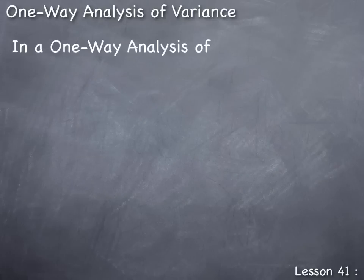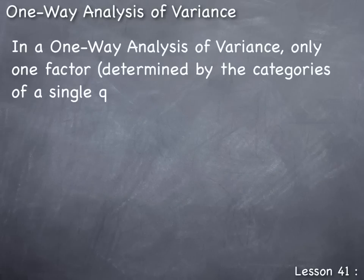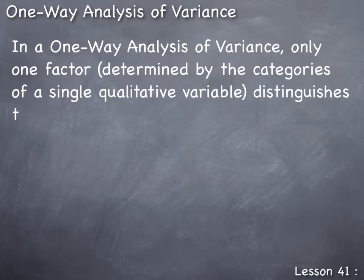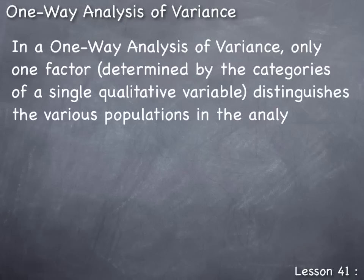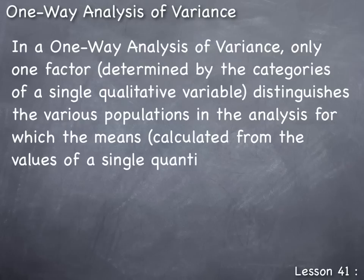In a one-way analysis of variance, only one factor — determined by the categories of a single qualitative variable — distinguishes the various populations in the analysis for which the means, calculated from the values of a single quantitative variable, are compared.